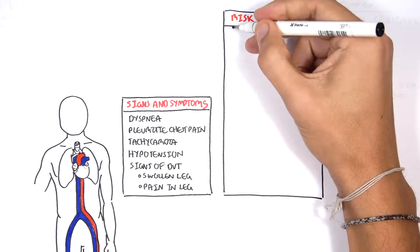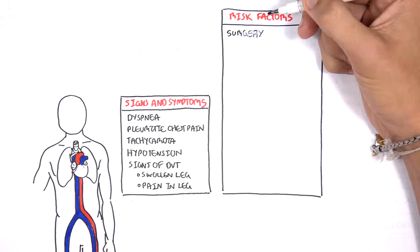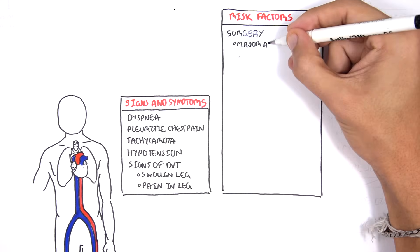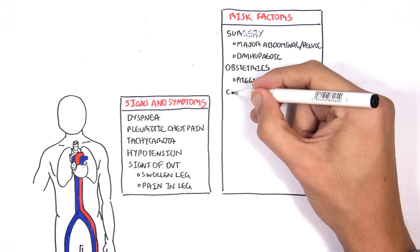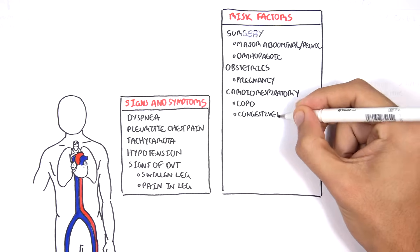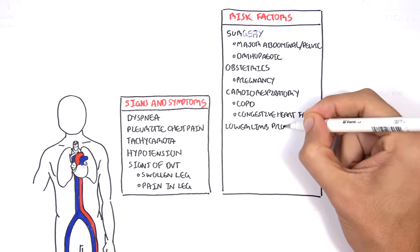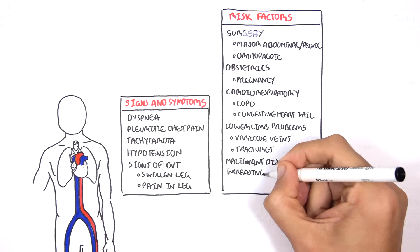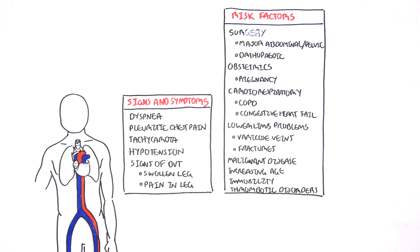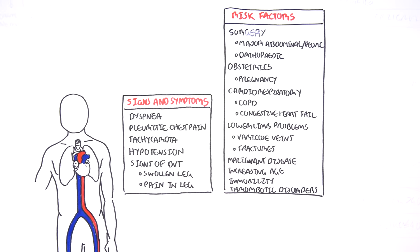But there are other risk factors that can lead to pulmonary embolism, including surgeries such as major abdominal and pelvic surgeries, orthopedic surgeries, obstetrics such as pregnancy, cardiorespiratory problems such as COPD and congestive heart failure, lower limb problems such as varicose veins and fractures, malignant diseases, increasing age, immobility, and lastly thrombotic disorders.